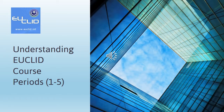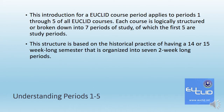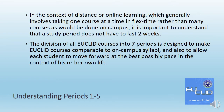This introduction for a Euclid course period applies to periods 1 through 5 of all Euclid courses. Each course is logically structured or broken down into 7 periods of study, of which the first 5 are study periods. This structure is based on the historical practice of having a 14- or 15-week-long semester that is organized into 7 two-week-long periods.